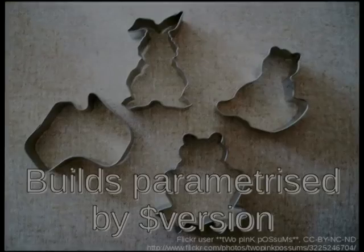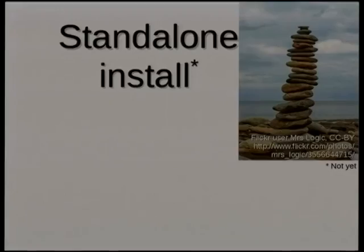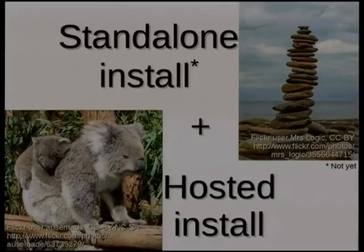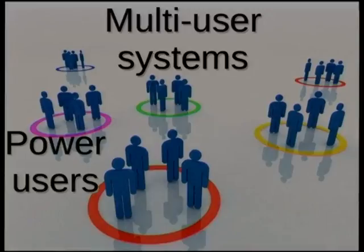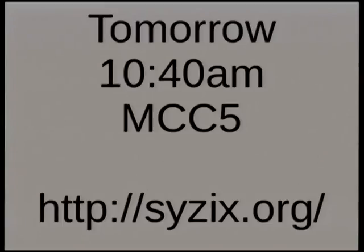SISX's build system is highly parameterized by version. Most software, most of the time, the actual build process doesn't change from version to version, so you should just be able to hit build on the new version and get it. It can either be installed standalone as a full distribution, or hosted — because everything lives under /sw, it's independent of whether you run CentOS or SUSE or whatever. The target audience is multi-user systems: large sites running shared login systems, power users, and developers. Tomorrow at 10:40am at the start of the cross-distro mini-conf, I'm happy to field questions then.